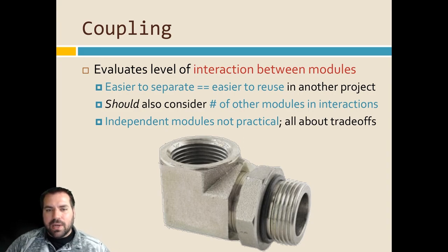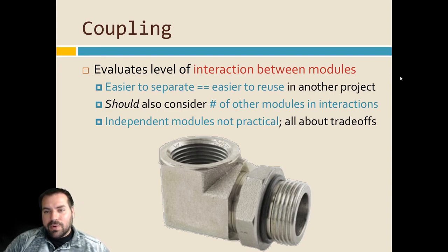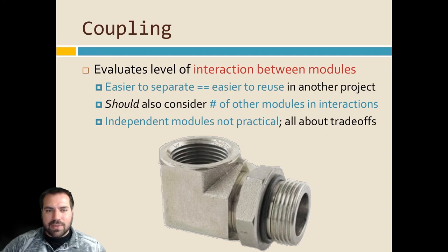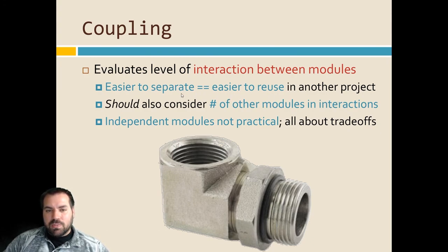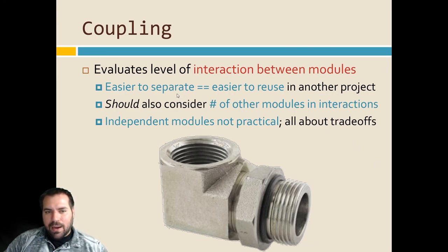We have these modules with nice cohesion, separated and grouped sensibly. But now they're going to have to interact with each other. If we had one big module there'd be no coupling at all — no pieces to interact. Coupling is the way those inner modules interact with each other. The spoiler: we want very loose coupling. Loose coupling makes it easier to reuse code, easier to test code, and less prone to errors.